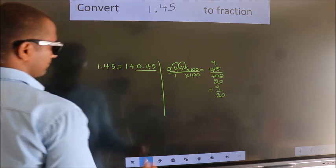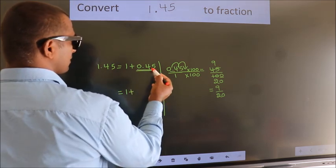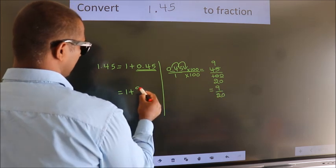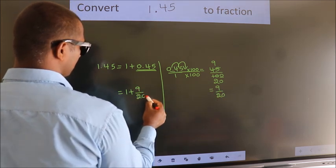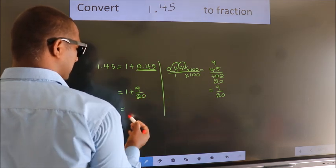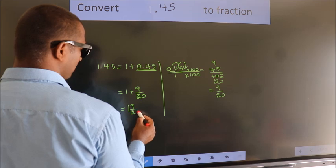Now here, 1 plus—in place of this we write the fraction 9 over 20. So 1 plus 9 over 20. In mixed fraction, it is 1 and 9 over 20.